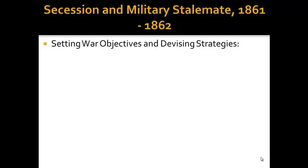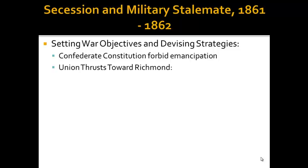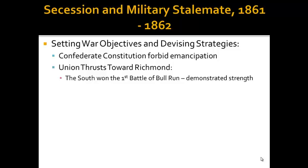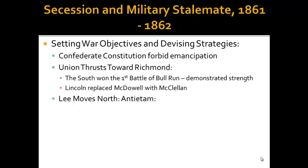The Confederate Constitution forbade any type of emancipation for slaves ever. The South won the first Battle of Bull Run, which really demonstrated the strength of the Rebellion. Many people thought this would be a quick war, and it was anything but. Lincoln began to replace generals — he replaced General McDowell with McClellan. This became a theme throughout the Civil War; he would constantly replace generals he felt were not committed enough to the war effort.